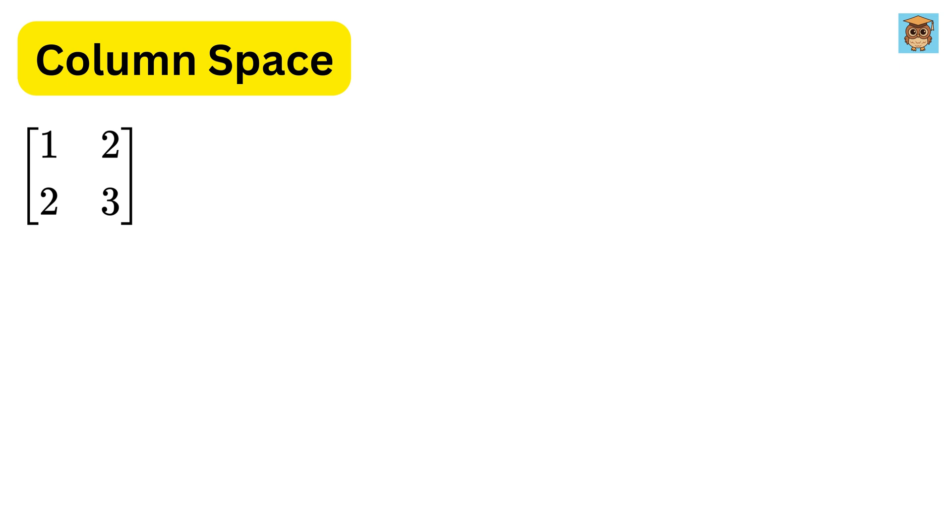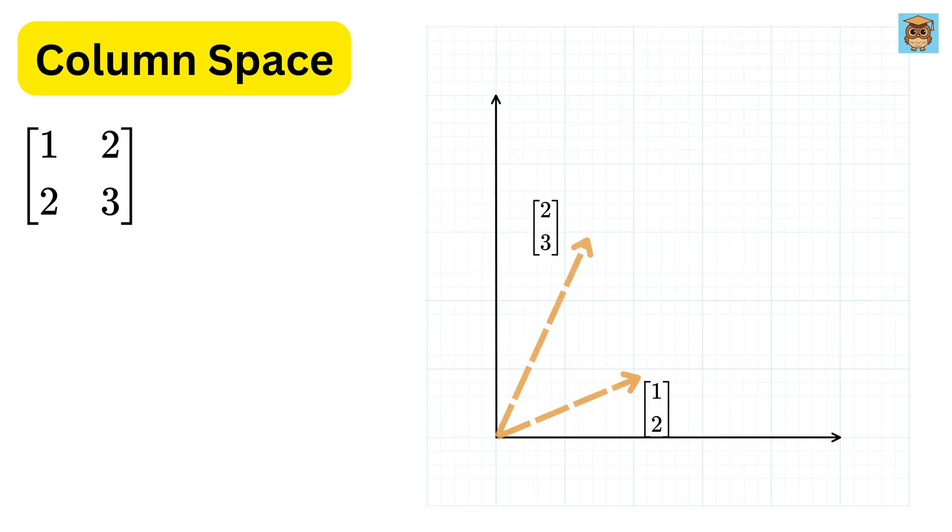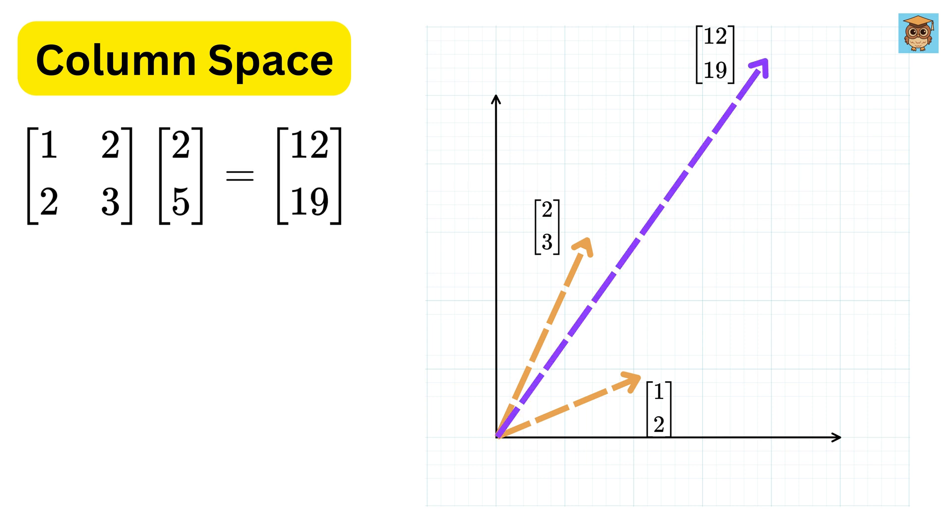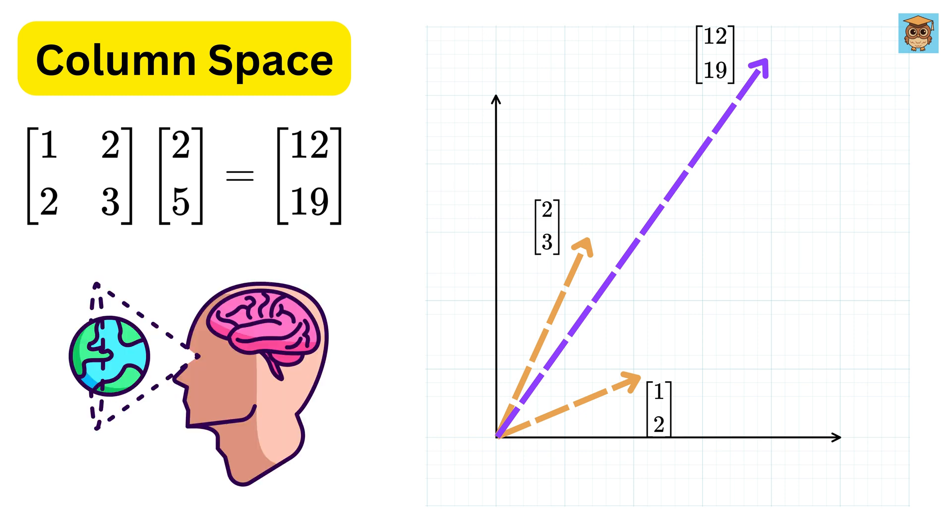Now, consider this matrix. We can represent its columns like this, which will look like these on a graph. These are independent columns, which means they're not multiples of each other. Now, let us multiply 2 and 5 with this one. We get 12 and 19, which lie somewhere here. I know these vectors are not drawn perfectly to scale, and they also might not show the exact directions, but that's totally okay. The point here is not to make an accurate geometric diagram, but to build a visual intuition. We just want to see what's going on.